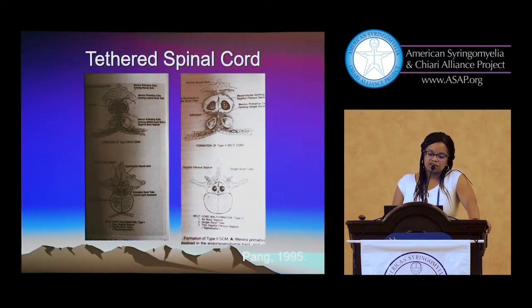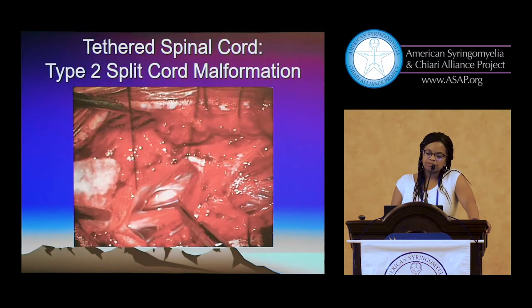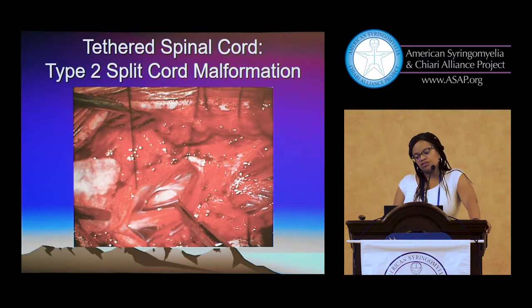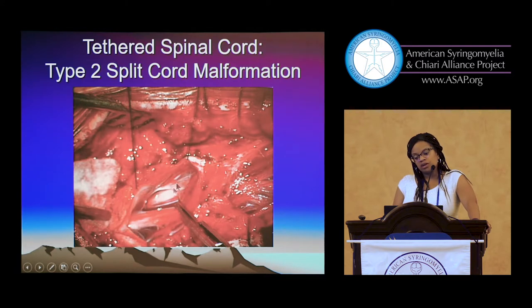This is just a schematic of how that forms. At surgery for a type 2 split cord malformation, you see one half of the spinal cord with the nerves coming out, the other half on the other side with its nerves, and then just a membrane in between.